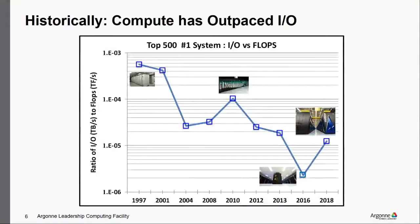Why do we care about the performance of IO? This historical plot shows the ratio of IO performance to compute performance on the top 500 list. Clearly, the IO peak performance has not kept pace with compute performance. If you were running a simulation in 2010 and wanted to scale up to leadership-scale machines today, you would be spending a larger portion of your time doing IO. IO can become a bottleneck just from scaling up to the top systems.